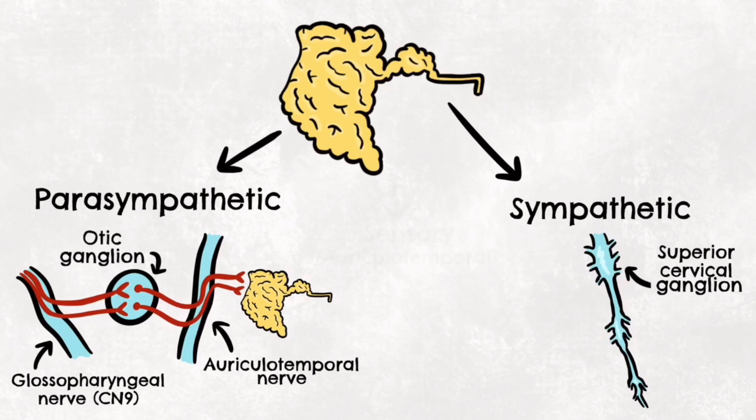Sensory innervation is supplied by the auriculotemporal nerve for the gland itself, and the great auricular nerve for the fascia.